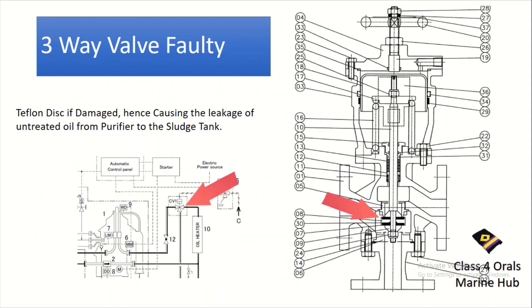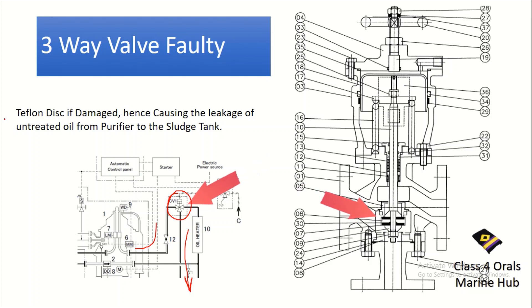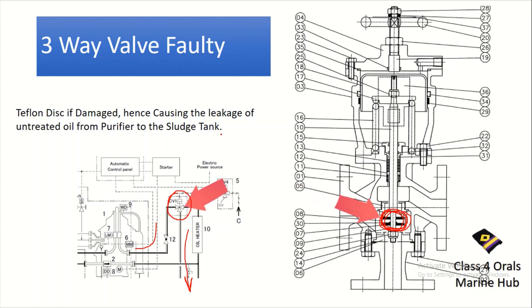This is the last reason. There is a three-way valve before the purifier at the oil entrance. When the purifier undergoes the desludging procedure, the three-way valve gets activated and does not feed oil to the purifier — it returns oil back to the settling tank. However, there is a Teflon disc mounted here, and if that Teflon disc is damaged, it will cause leakage of untreated oil from the purifier to the slush tank. In that case, the purifier will start overflowing or leaking. This is also one of the reasons for purifier overflowing.